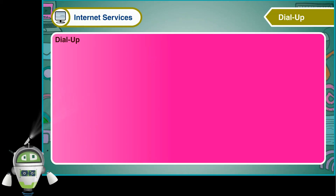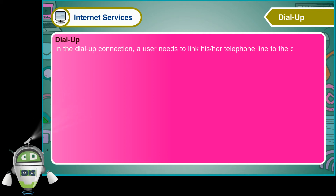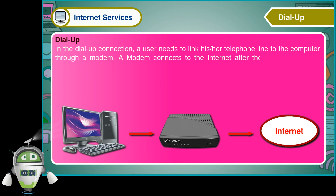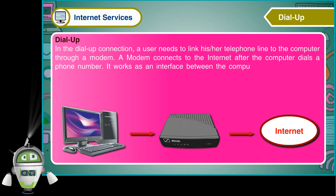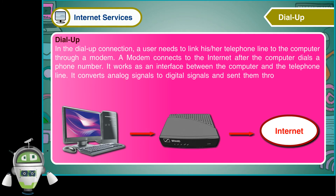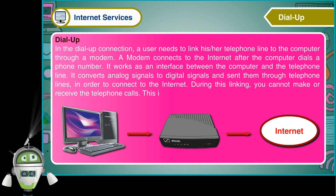Dial-up. In the dial-up connection, a user needs to link his or her telephone line to the computer through a modem. A modem connects to the internet after the computer dials a phone number. It works as an interface between the computer and the telephone line. It converts analog signals to digital signals and sends them through telephone lines. In order to connect to the internet, during this linking, you cannot make or receive telephone calls. This is a very slow process, so it has become outdated.